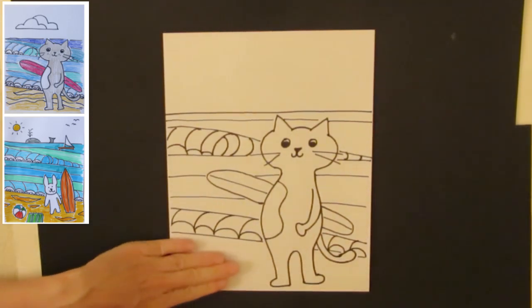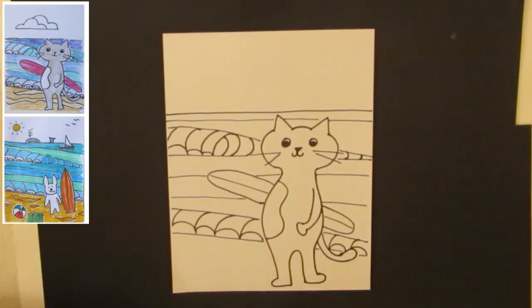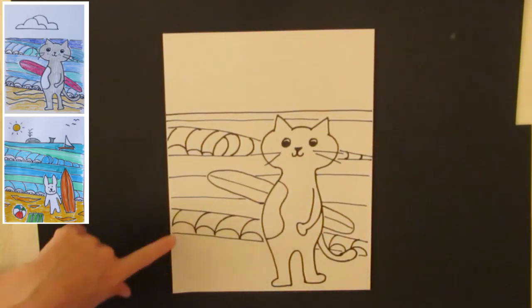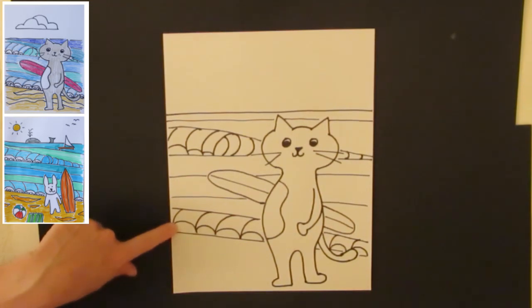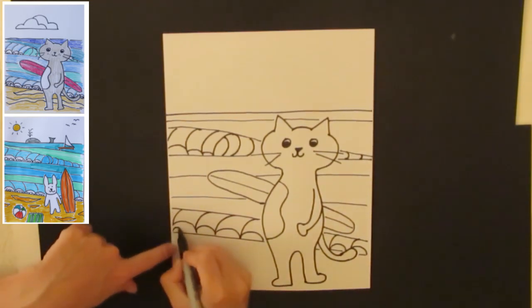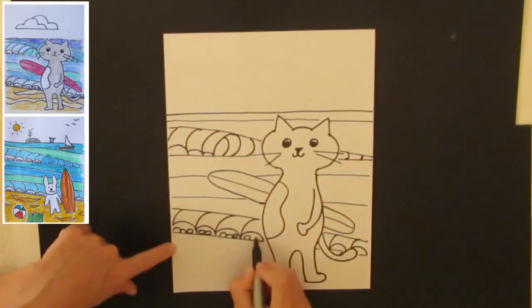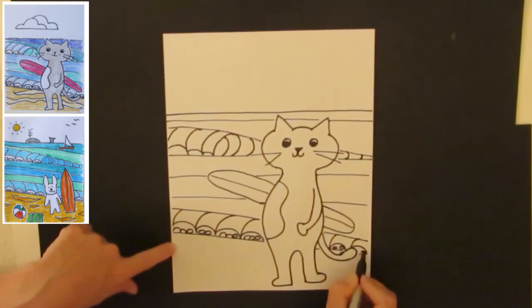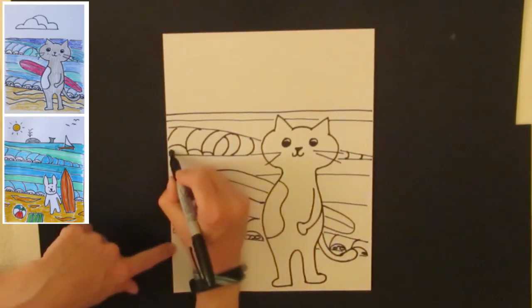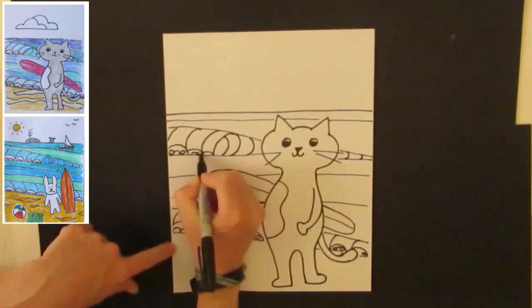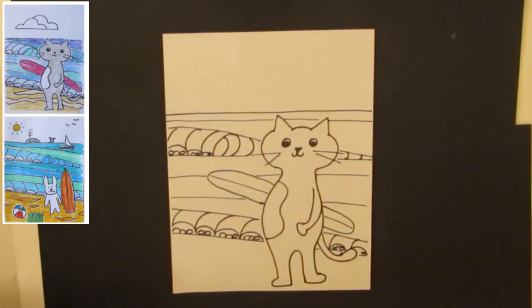Now the beach. You can leave the beach plain. Oh actually, before the beach, let's do the waves. Finish off the waves. The splashes on the waves can be little circles or semi-circles. So you can make a circle or a semi-circle and fill these in however you wish to show some more splashes. And up here too.